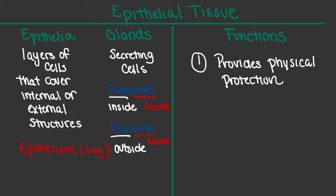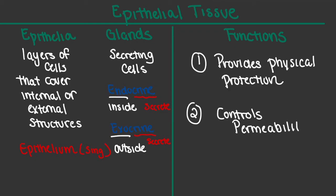The next function is that our epithelial tissue also helps to control permeability. In other words, the epithelial tissue has the important role of deciding what is allowed to come into the body and what's allowed to go out of the body — it simply controls what enters and what exits.